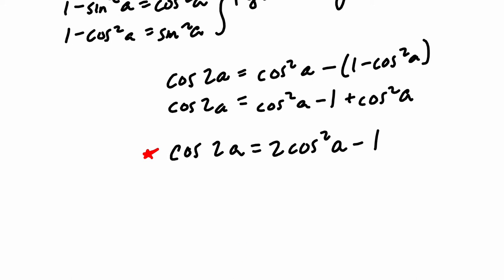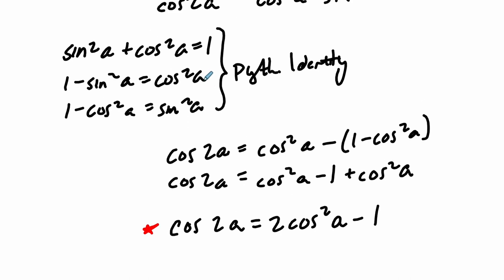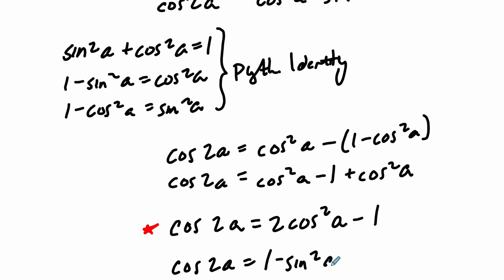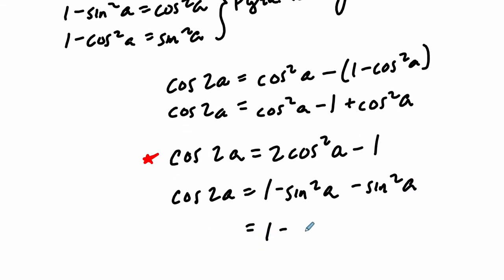We could also rewrite it a different way. Instead of substituting 1 minus cosine squared A for sine squared A, we can say cosine squared A equals 1 minus sine squared A, then subtract sine squared A. So cosine of 2A equals 1 minus 2 sine squared A. This is another classic formula.